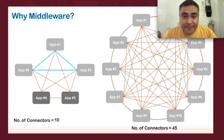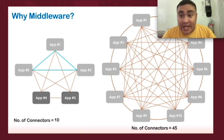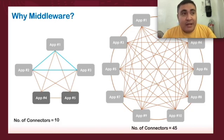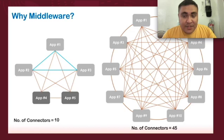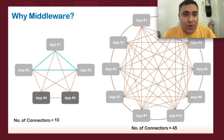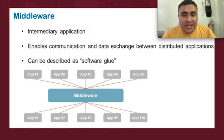You might say ten connections is still a manageable number, but in the long run, what if we add more applications? From five we then connect another five applications to the integrated system — you will now need to maintain 45 connections. The more connections you maintain, the more complicated it becomes, and the harder it is to monitor the flow of data and information.